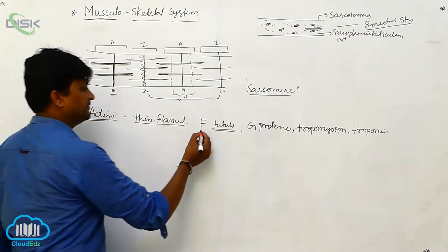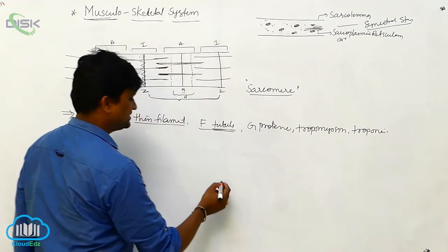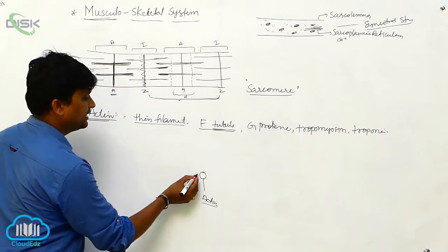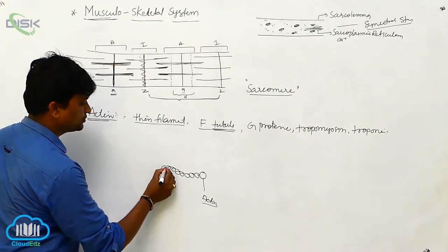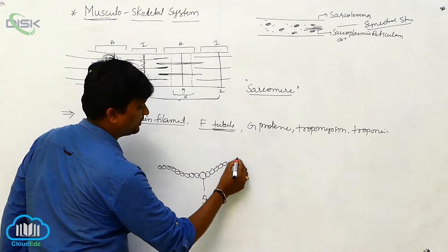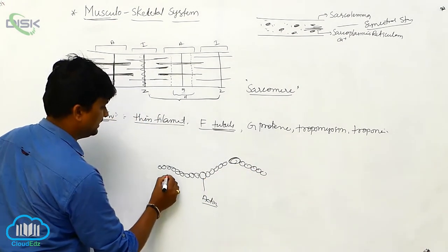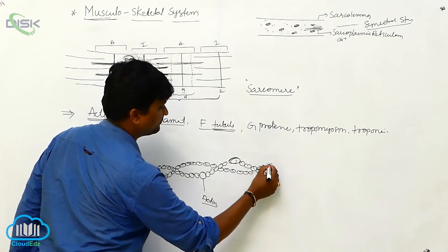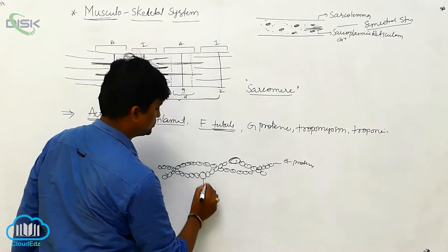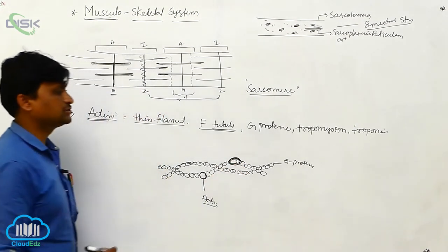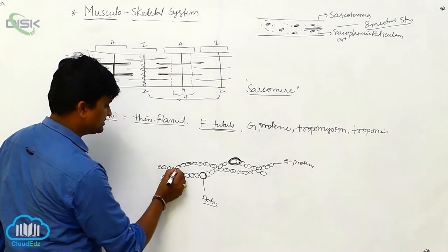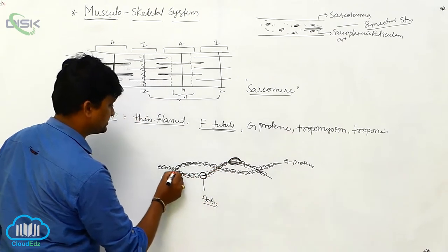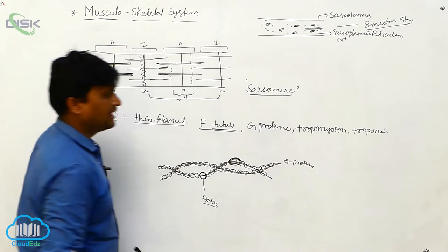Actin is considered a thin filament consisting of F-tubules and G proteins. The actin filament has globular helical proteins — these globular proteins are called G proteins. Over the actin structure there is a stripe-like structure overlapping each other, which we call tropomyosin fibers. This stripe-like overlapping structure is called the tropomyosin structure.